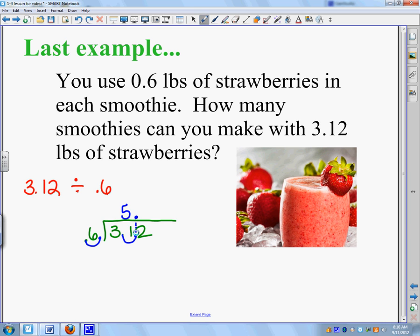I carried my decimal point all the way up to this spot. Remember, you go right straight up. 5 times 6 is 30. And then I have 1 left over. I bring my 2 down, and that becomes 12. 6 goes into 12 twice. So, I can make 5.2 smoothies.